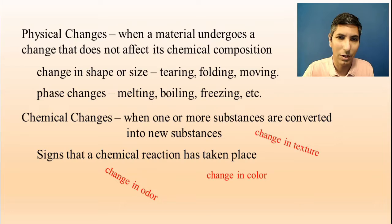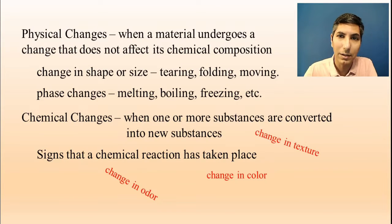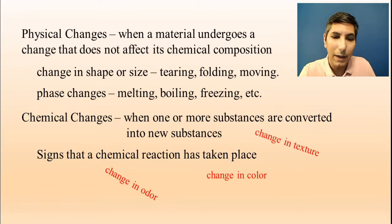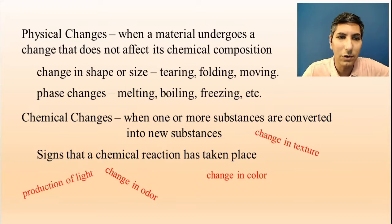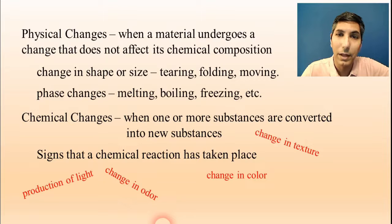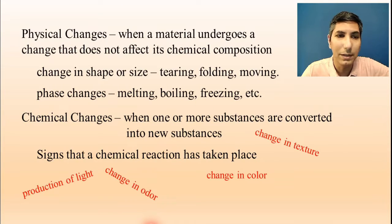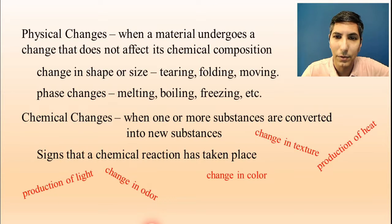Change in texture: if you take a piece of paper and burn it, perhaps that paper was nice and smooth before, and after it's burned it's all brittle — that's a sign of a chemical reaction. Production of light — we often see that in the form of a flame, but it can also be bioluminescence or chemiluminescence. Those are signs of a chemical reaction.